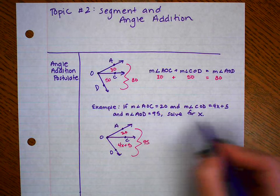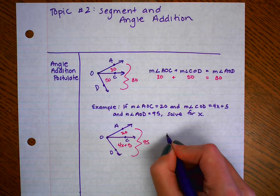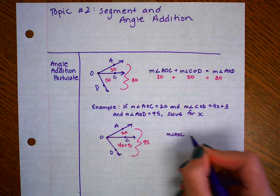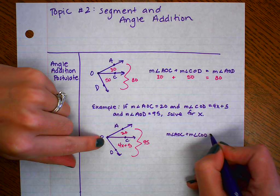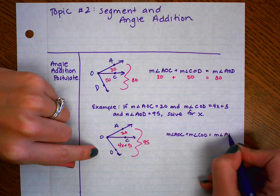Well, let's set up our equation. The angle addition postulate says that the measure of angle AOC plus the measure of angle COD should equal the measure of the whole thing, AOD.